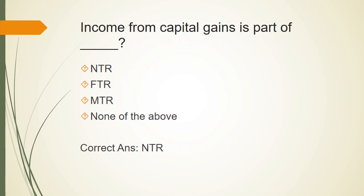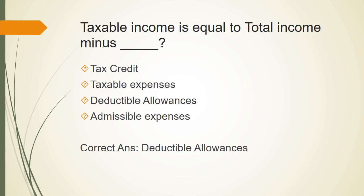Income from capital gains is part of NTR (Normal Tax Regime), because it comes under a head of income. Taxable income equals total income minus deductible allowances. Deductible allowances include Zakat, WWF (Workers' Welfare Fund), and Workers' Participation Fund, among a few others. When these are subtracted from total income, we arrive at taxable income.